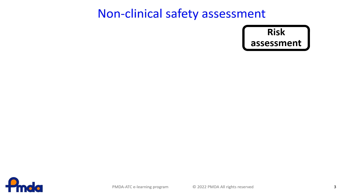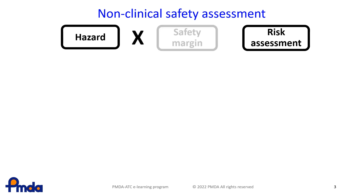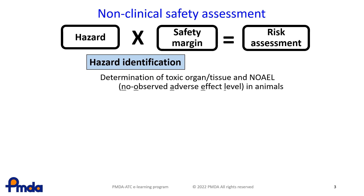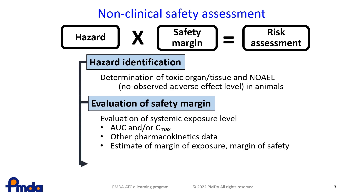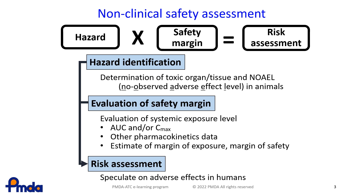The risks of pharmaceutical agents in humans are evaluated by hazard identification and safety margin. Hazard identification means identifying the toxicological effects on organs and tissue based on the results of toxicity studies and making the determination of the NOAEL. The safety margin is determined based on the systemic exposure level and NOAEL. Risks in humans are hypothesized or envisaged using the hazard identification and safety margin.